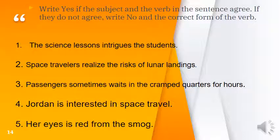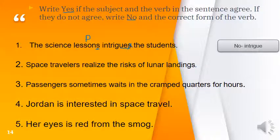Now let's do some practice. Write 'yes' if the subject and verb agree, and 'no' if they do not agree — and write the correct form. The first sentence: 'The science lessons intrigue the students.' Lessons is plural, so we should not add S to the verb. The correct form is 'intrigue'. Number two: 'Space travelers realize the risks.' Travelers is plural, no S on the verb — so this is correct. Yes.